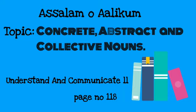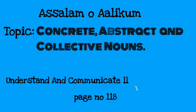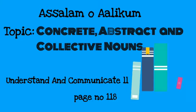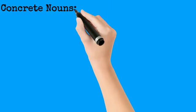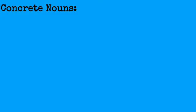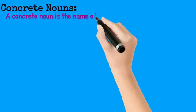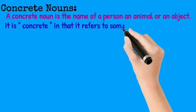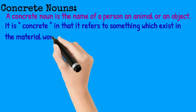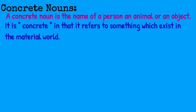So let me tell you about the concrete nouns. Do you know about the concrete noun? A concrete noun is the name of a person, an animal or an object. It is concrete in that it refers to something which exists in the material world. In other words, what a concrete noun refers to has material form. It can be seen or touched.